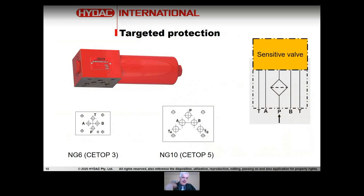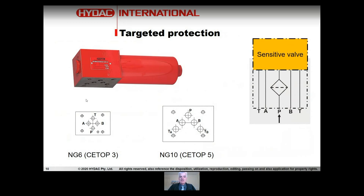You can also have targeted protection. If you have very sensitive components — say a servo valve or proportional valve — there's an opportunity to put a filter directly in line before that component. One neat way of doing that is using a filter with an interface suited to industrial valve interfaces: NG6 CTOP3 or NG10 CTOP5. This is called a DFZ, sometimes referred to as a last-chance filter, protecting that very sensitive and sometimes very expensive component after your principal filtration has occurred.